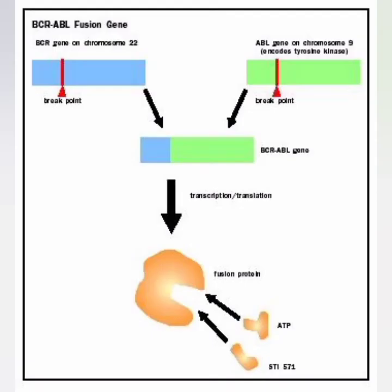The second characteristic is that the ABL-BCR hybrid inhibits DNA repair mechanisms. Third, the hybrid has the capacity to activate cascades of proteins, triggering a series of signaling events that ultimately result in uncontrolled cell division and the development of cancer.